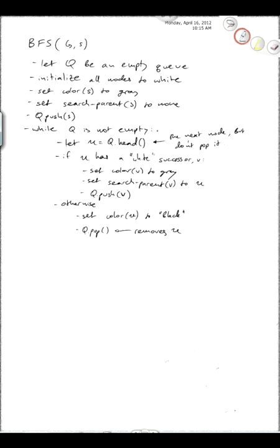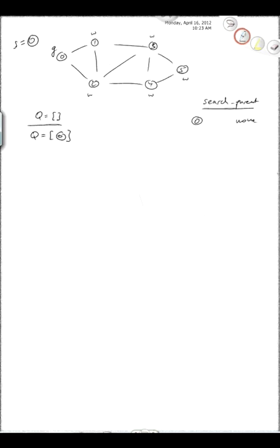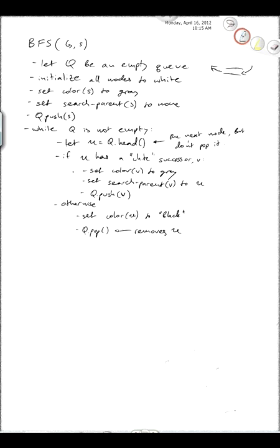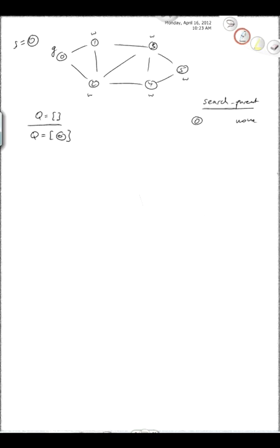The loop says the queue is not empty, and currently the queue does have something on it. We set u to be whatever is at the front of the queue. Remember that a queue is like a pipe where new stuff comes in on one end and we take stuff off the other end. Right now at the front of the queue is node 0, so u equals 0. We ask: does 0 have any white successors? And it does — it has two of them, 1 and 2.